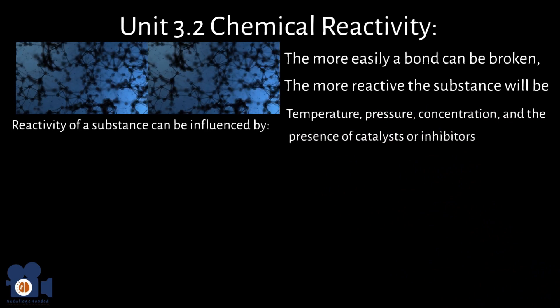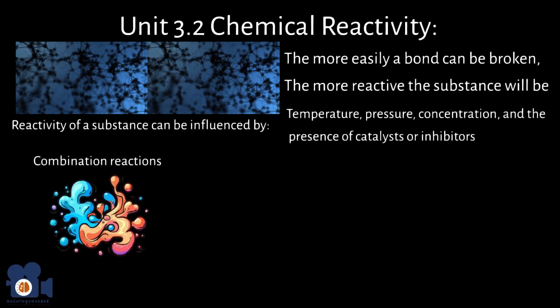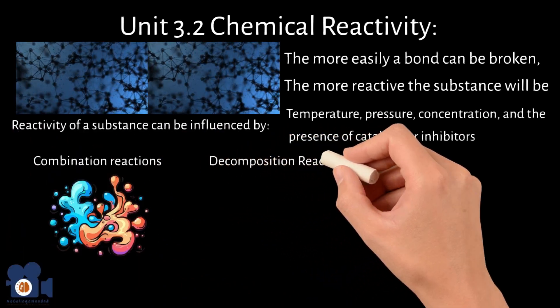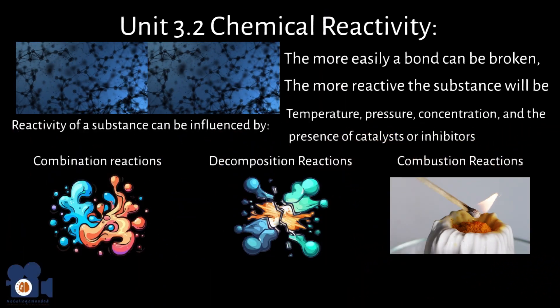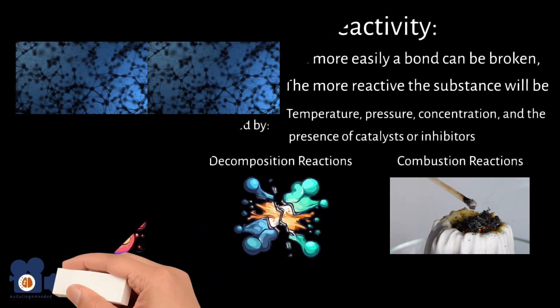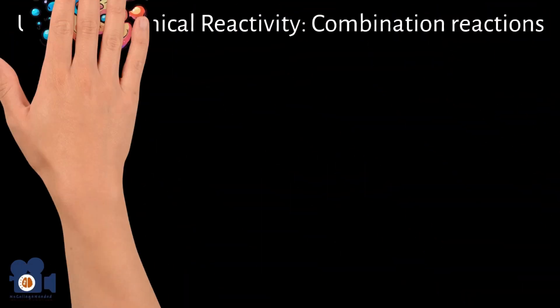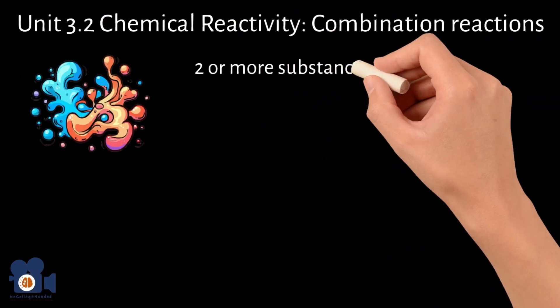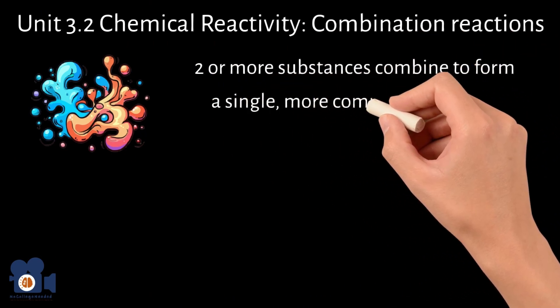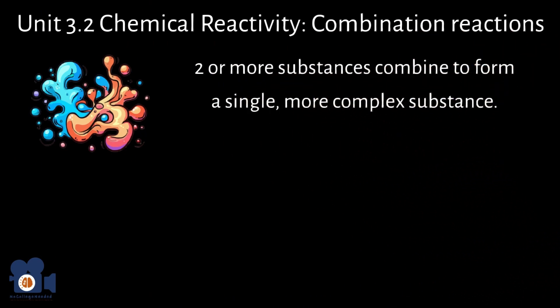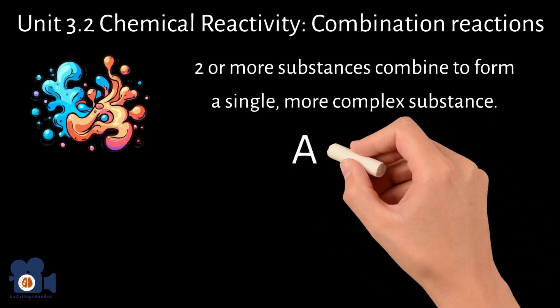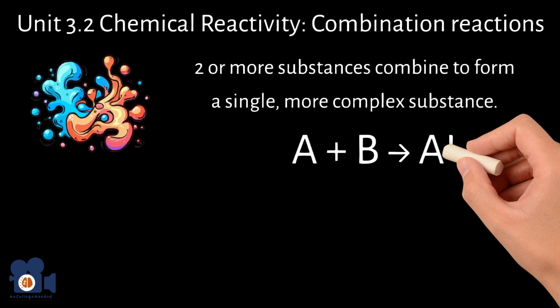There are various types of chemical reactions, but three of the most frequent types of reactions are called combination reactions, decomposition reactions, and combustion reactions. Combination reactions are a type of chemical reaction in which two or more substances combine to form a single more complex substance. The general equation for a combination reaction can be represented as follows: A plus B going to AB.